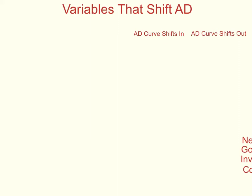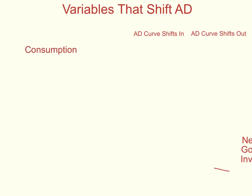This is Mrs. Stevens talking about variables that shift the AD curve — aggregate demand. I'm referring to one of the bullet points on my learning objectives for Chapter 23, which is to explain events that may cause the AD curve to shift, and also to list and explain at least two examples. We're going to go through the four components of aggregate demand, which are the four variables that shift the AD curve.